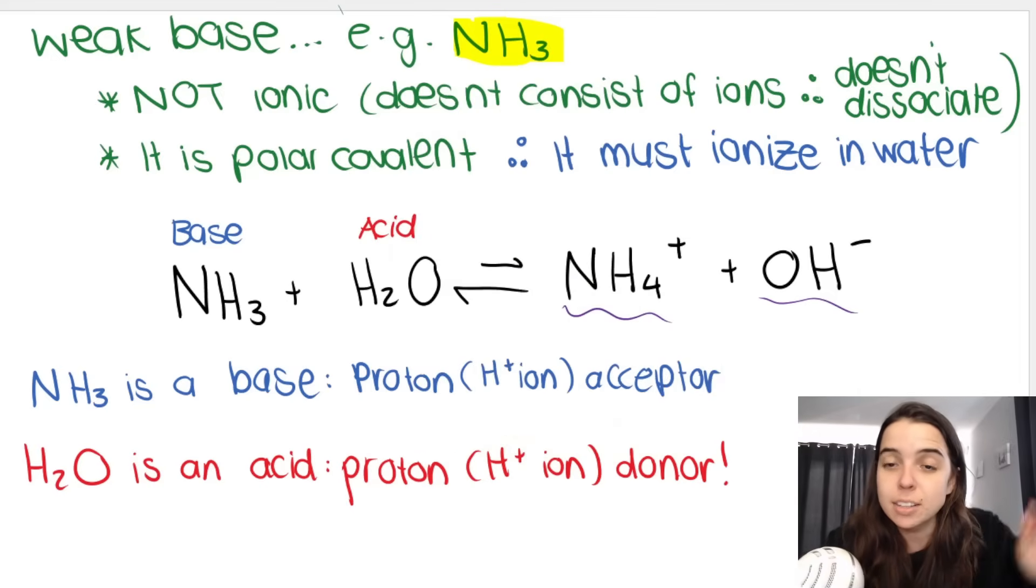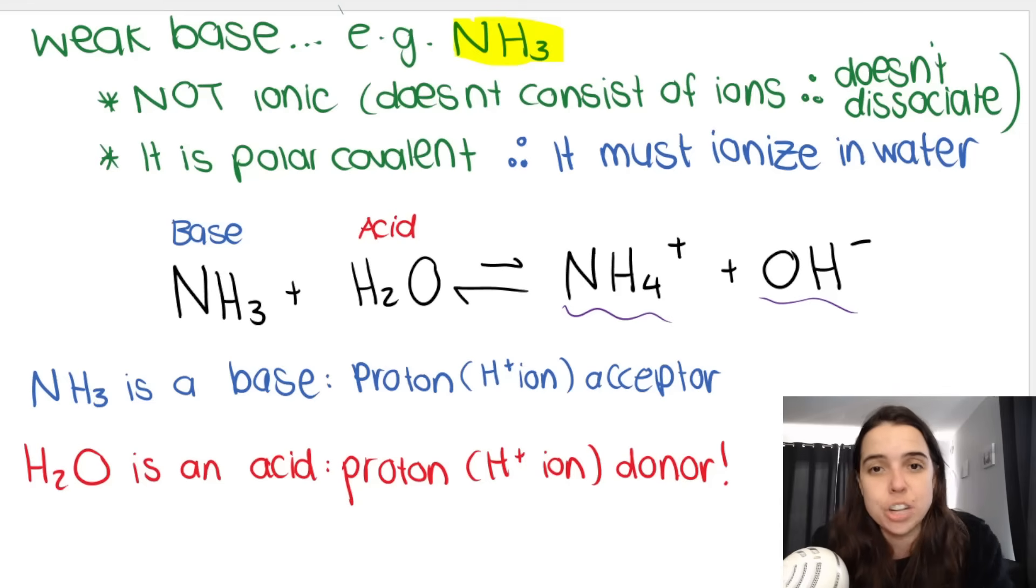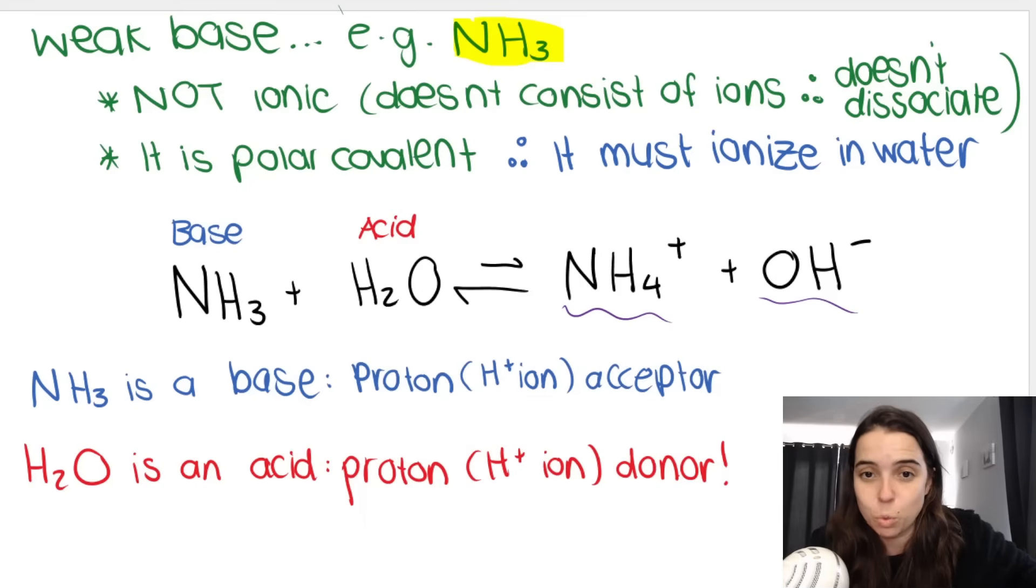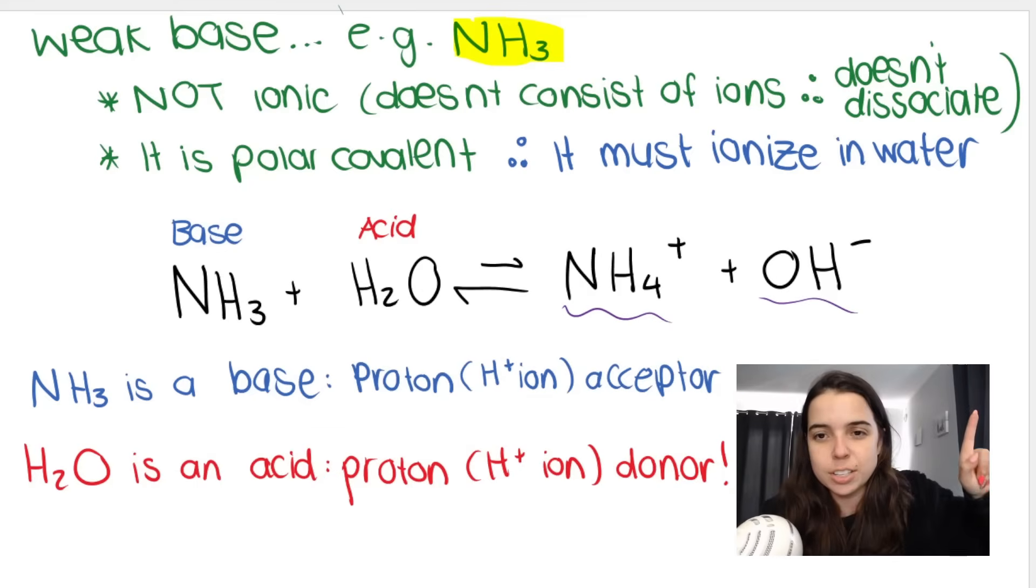Ammonia is not ionic. Remember, ionic is metal and non-metal. Ammonia is a non-metal and a non-metal. Hydrogen and nitrogen are both non-metals, which means it doesn't dissociate. It's not ionic, it doesn't consist of ions. It is a covalent molecule, which means it ionizes in water. So this is what the reaction looks like.